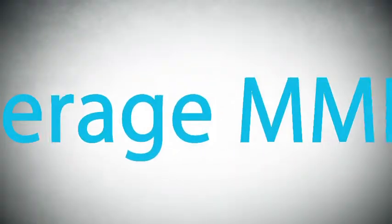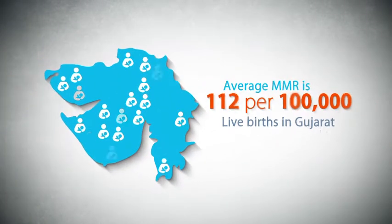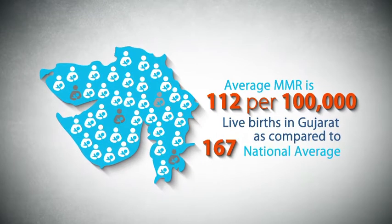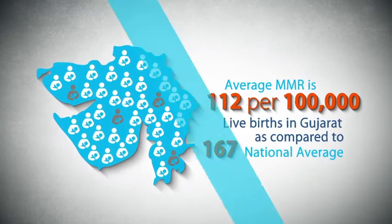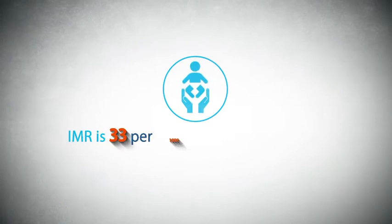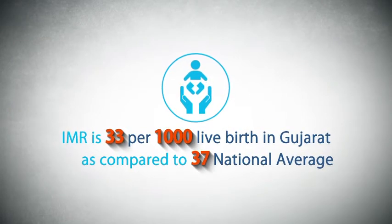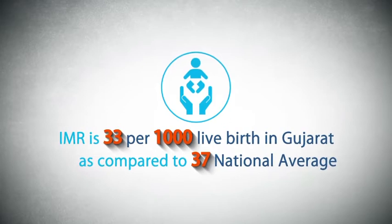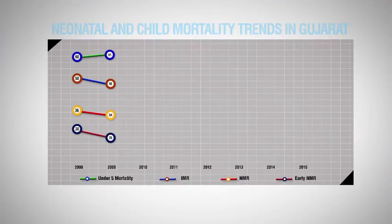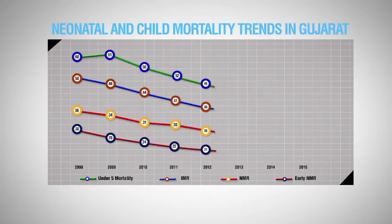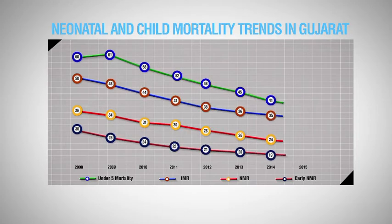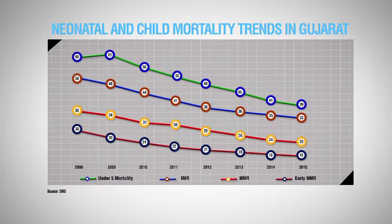The average MMR is 112 per 100,000 live births in Gujarat, as compared to the national average of 167. The IMR is 33 per 1,000 live births in Gujarat as compared to the national average of 37. The infant mortality rate and maternal mortality rate has dropped by 8% from 2008 as per the SRS data, reflecting change over a long period of time.